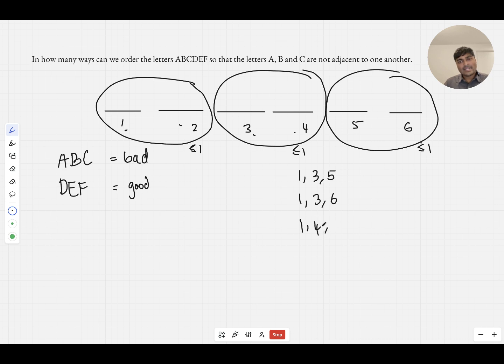In terms of those are the only ones with one and three, I guess I can look at one and four next. Now if I pick four, I'm not allowed to pick five because those two would be next to each other, so I'd have to pick six there. So I could have one, four, six, and those are the only ways that I could have one as part of my bad letters.